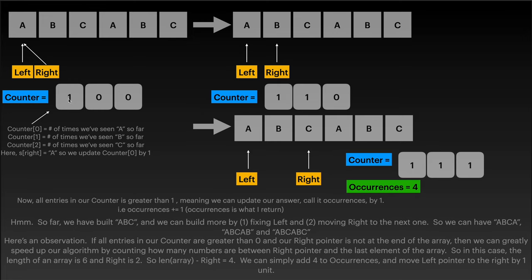Right now when both left and right pointers are pointing to the first 'a', we update counter[0] by one. Then we move the right pointer to the next element, which is 'b', and we update the counter — so the second entry in the counter array will be one instead of zero. We move the right pointer again to the right, and we update the third entry in the counter array by one because that corresponds to 'c'. Now we notice that all entries in the counter array are greater than zero.